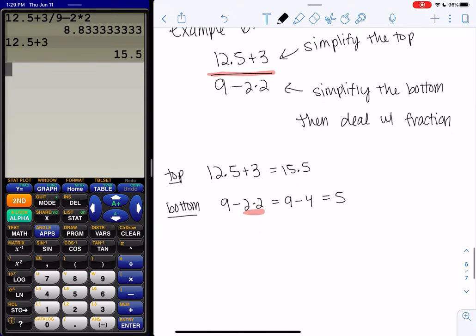So we've done order of operations on the top and bottom separately. We'll go ahead and combine them. And then we just divide, right? Fractions technically mean division. So divide to get rid of the fraction.